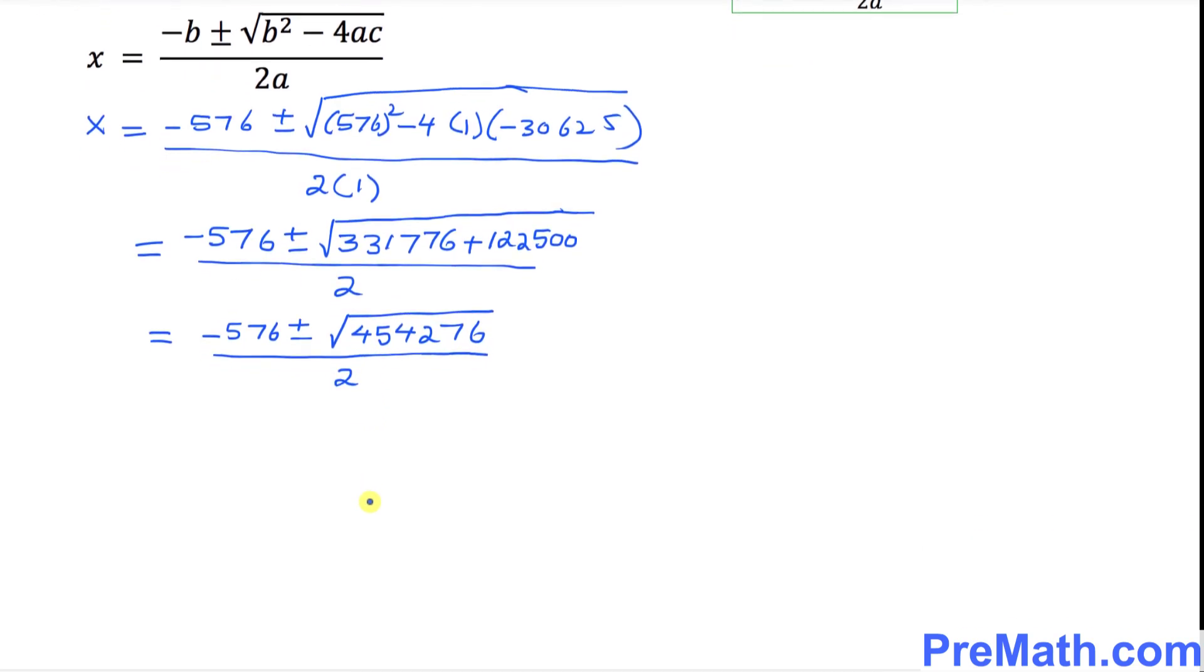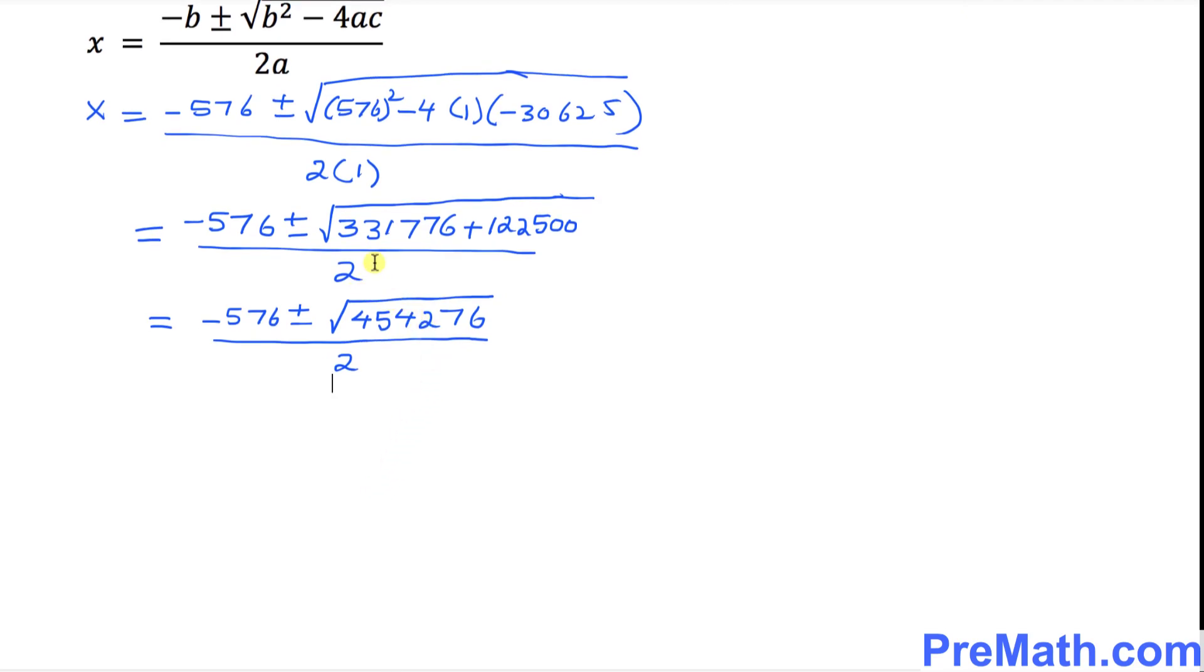And the next step is I want you to take care of this radical part. This is a complete perfect square. So this could be written as negative 576 plus or minus 674. The square root of this number is 674 divided by 2.